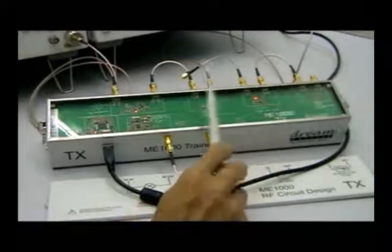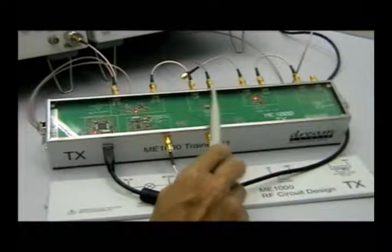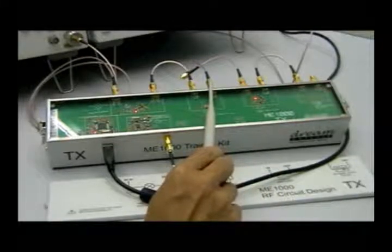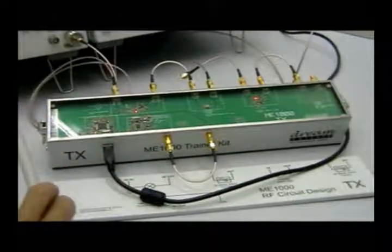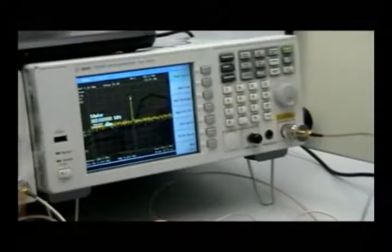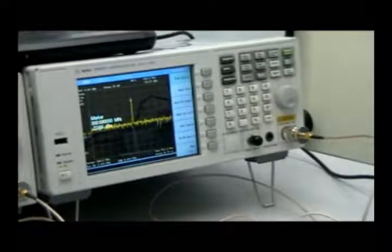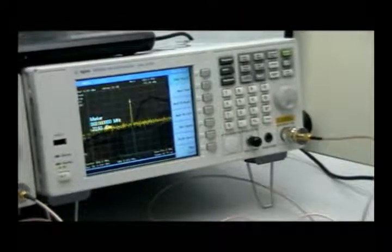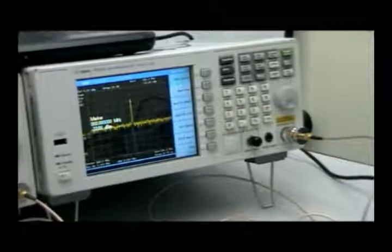So the next stage is to move the spectrum analyzer to the output of the RF bandpass filter. And we can see that we've blocked many of the unwanted signals and we're left with an 868 megahertz signal at minus 23 dBm.